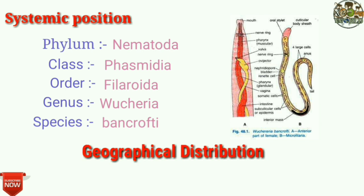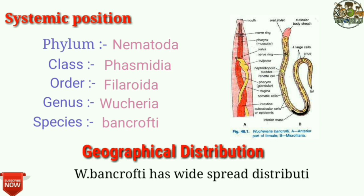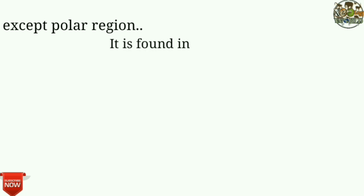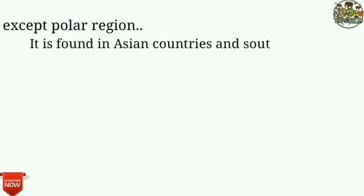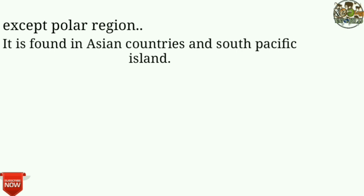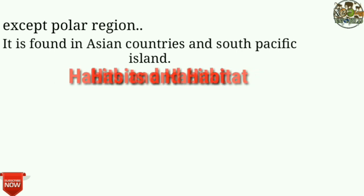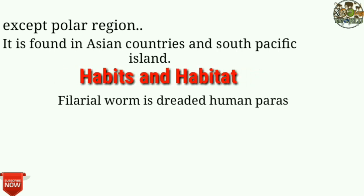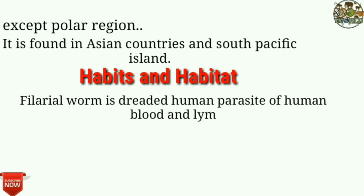Geographical distribution: Wuchereria bancrofti has widespread distribution throughout the world except polar regions. It is found in Asian countries and South Pacific Islands. The filarial worm is a parasite of human blood and lymph.